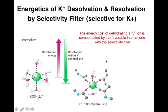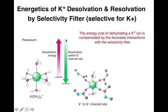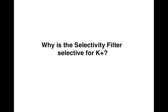The energy cost of dehydrating a potassium ion is compensated by favorable interactions within the selectivity filter. The desolvation energy — the energy cost of breaking the water shell — is smaller than the resolvation energy within the potassium channel site. Biochemical reactions usually occur in pairs: a favorable reaction is always coupled to an unfavorable reaction. Here, the resolvation is greater than the desolvation energy, therefore the potassium ion is passively transported through the channel.